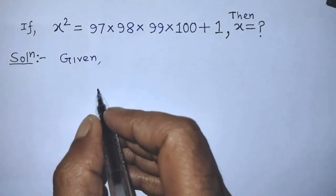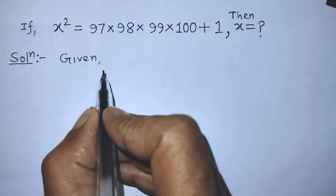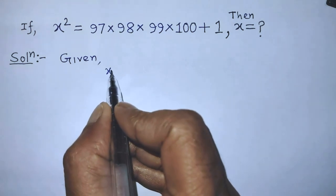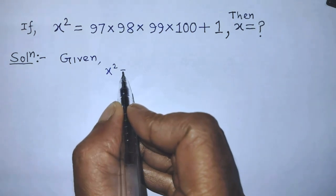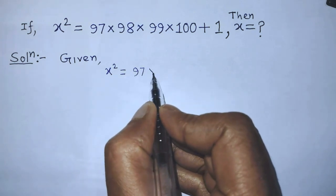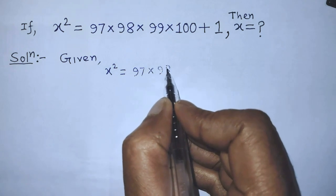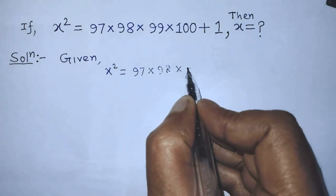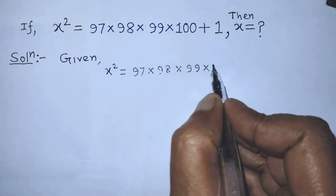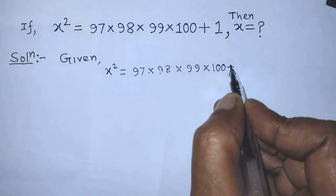Our given exponential equation is x to the power 2 is equal to 97 times 98 times 99 times 100 plus 1.